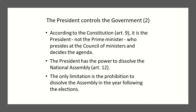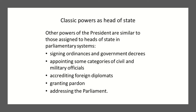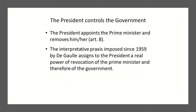The president has the classic powers as head of state: signing ordinances and governmental decrees, appointing categories of civil and military officials, accrediting foreign diplomats, granting pardon, and addressing parliament. The president appoints the prime minister and by virtue of doing so is also able to remove them — thus controlling the government. Even though the prime minister ostensibly controls government, the president controls the prime minister, and therefore controls the government.